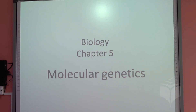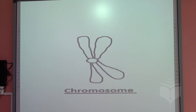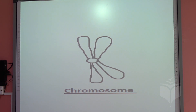Hello class. Today in this video we will finish talking about biology chapter 5, molecular genetics. As we all know, inside the nucleus there are chromosomes that carry our genes, and the number of chromosomes inside our cells is 46, as we are talking about the body cell or somatic cell.